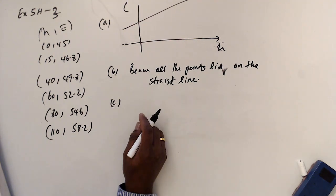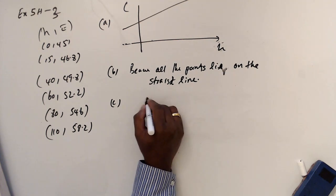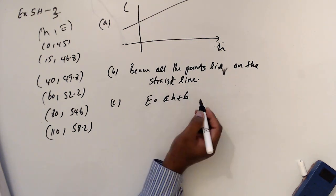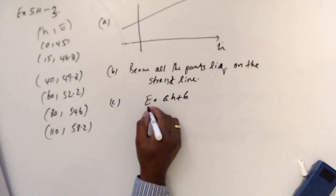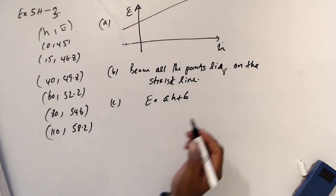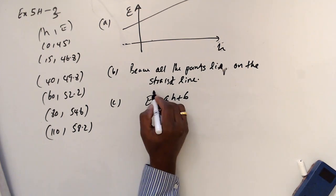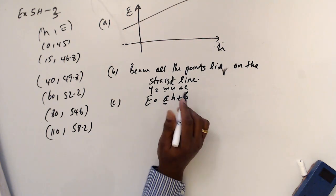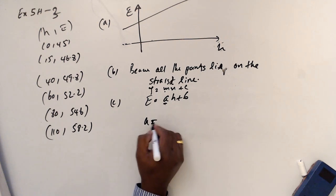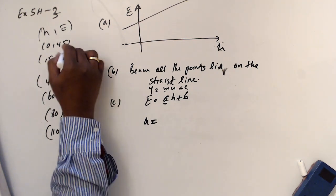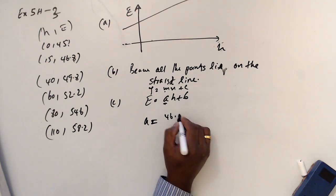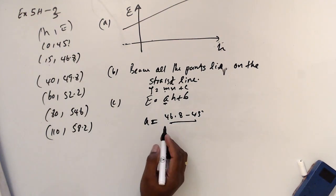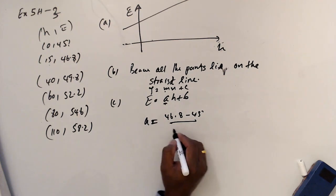Now, part C. Deduce the equation in the form E equals AH plus B. They use E, so this is E axis, this is H axis. Now E is, this is Y equals MX plus C form. M is the gradient. Likewise, A is the gradient here. How do you find a gradient? You take two points. Y1 minus Y2, 46.8 minus 45, over X1 minus X2.